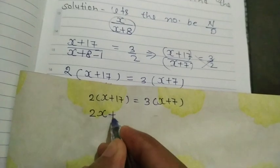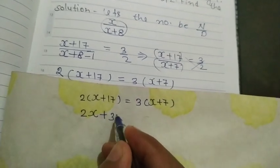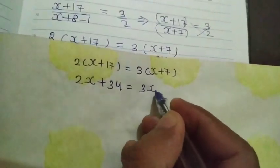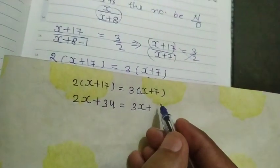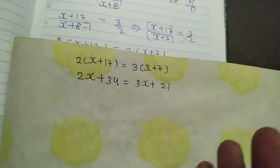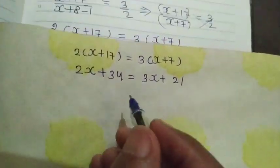2 multiply X is 2X, 2 multiply by 17 is 34. Here 3 multiply by X is 3X, plus 7 multiply by 3 is 21. Here we will move variables to one side and constants to another side.